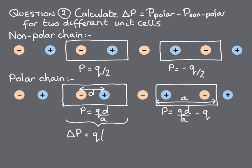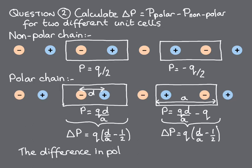Taking the difference between the polarisations for the polar and the non-polar chains, in both cases we get q times d over a minus a half. So we can conclude that the difference in polarisation between two periodic systems is the same, no matter which unit cell we use to calculate it.